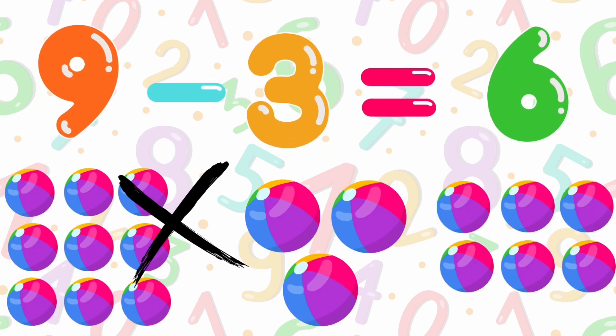9 minus 3 is equals to 6. 9 balls minus 3 balls is equals to 6.